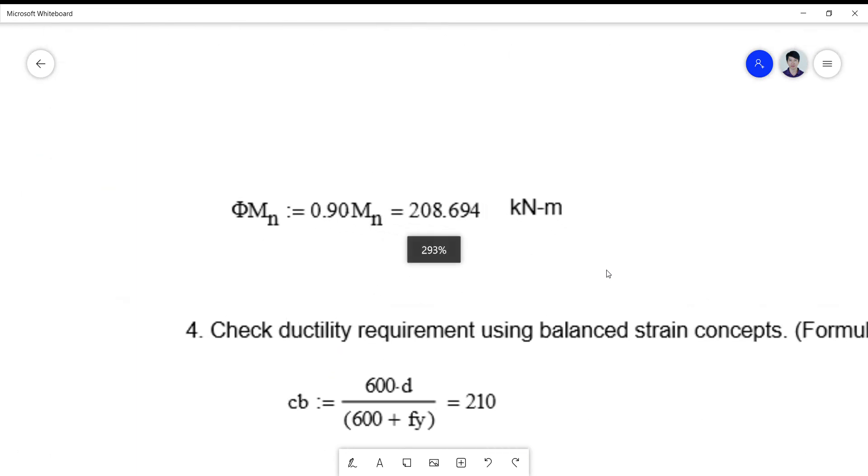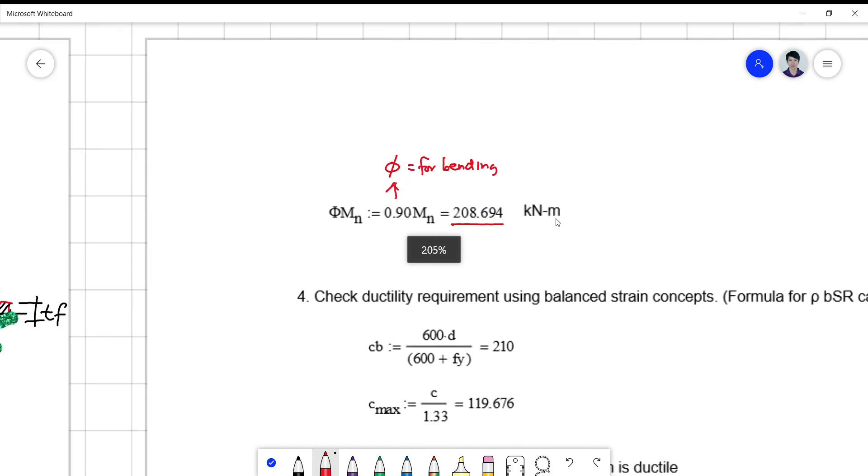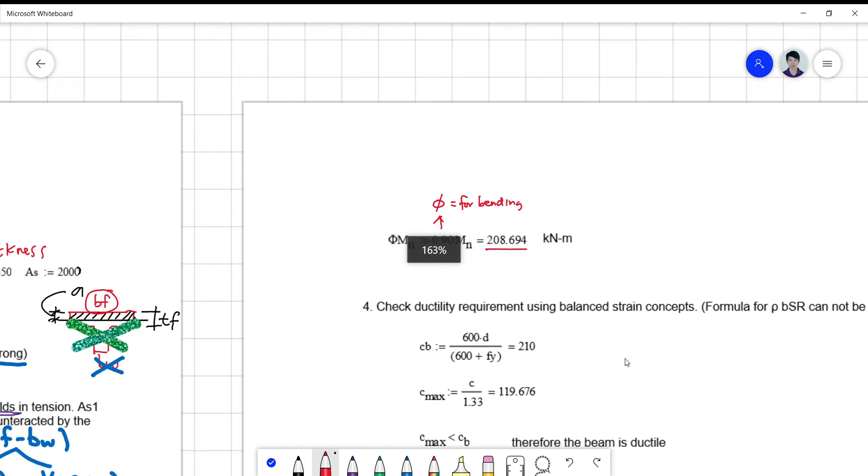So you add the two and multiply it by 0.90. Your final answer, so take note this is the reduction factor phi. This is used for bending. So 0.90 of the sum of MN1 and MN2 becomes 208.694 kilonewton meter.